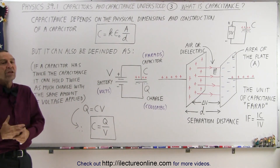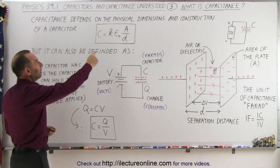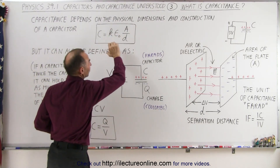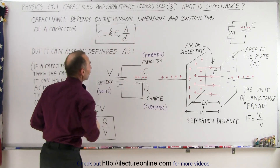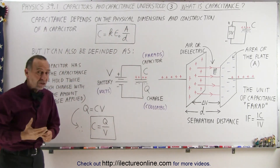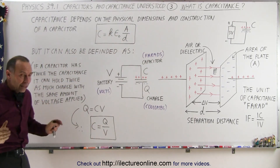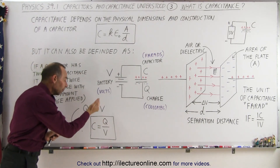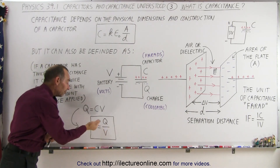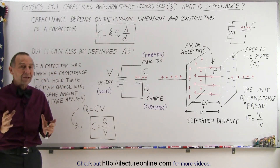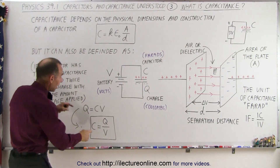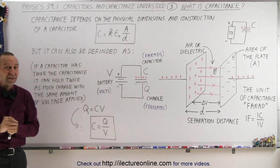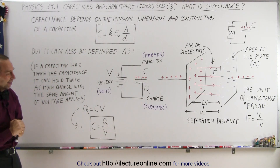So this gives us two definitions for capacitance. One is based simply on its physical characteristics — how it's constructed, what the dimensions are. The second definition is when you place it inside a circuit and apply a voltage: the amount of charge you collect for a particular amount of voltage also defines the capacitance of that capacitor. And it turns out these two are the same. That's how capacitance is defined.